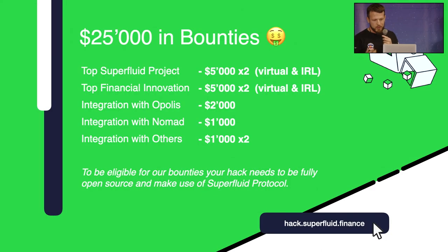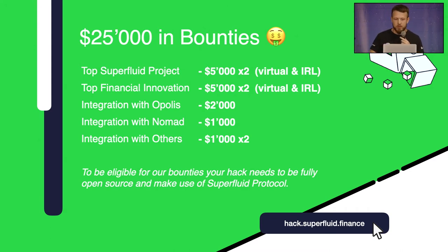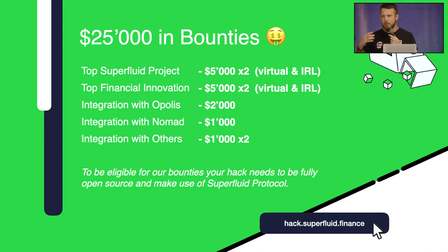For ETH Denver we have $25,000 in bounties — for top applications and some integration bounties. So if you want to build something integrating with other applications, it's very programmable and very composable, so you can pretty much build anything.